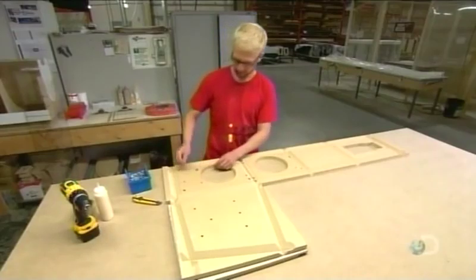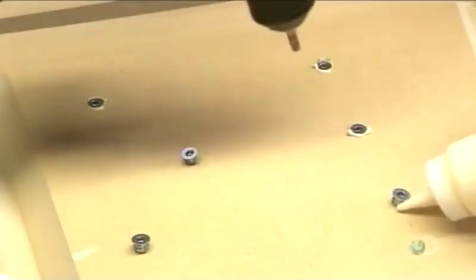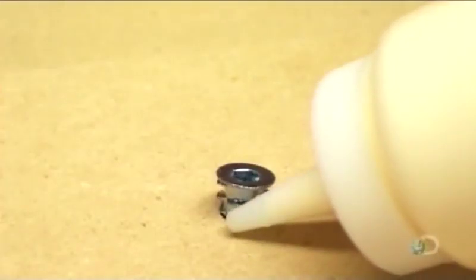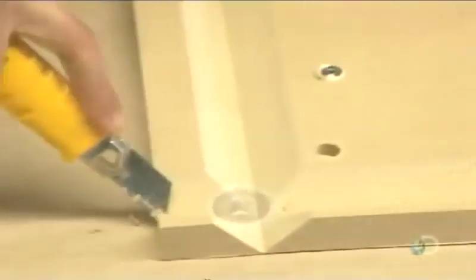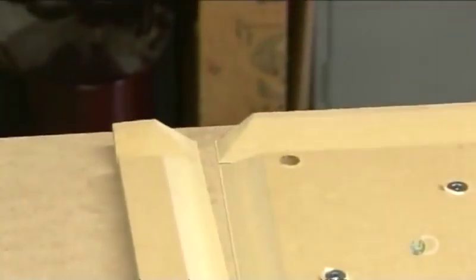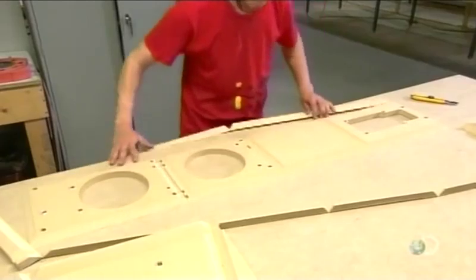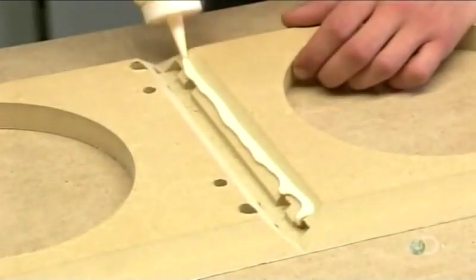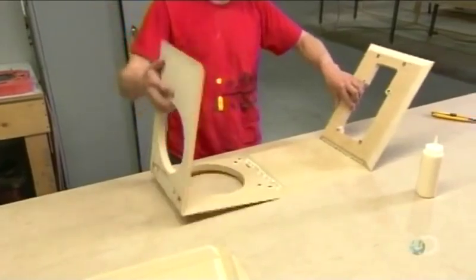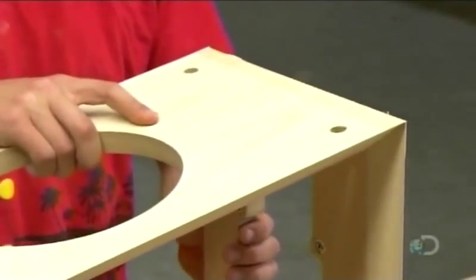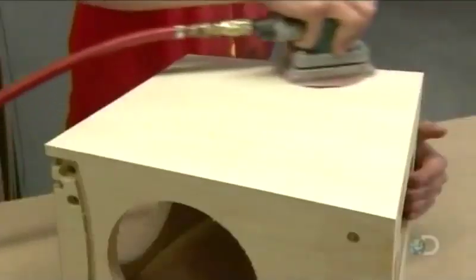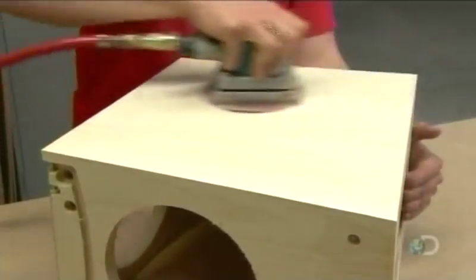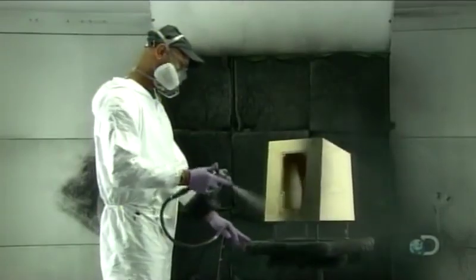A worker glues and drills screws into the bottom of the cabinetry for installing the speaker feet. He trims the excess from the edges of the cabinetry panel. He beads high-strength glue along the joints and folds the grooved panel to create the cabinet box. And now it's into the spray booth for the finishing touch.